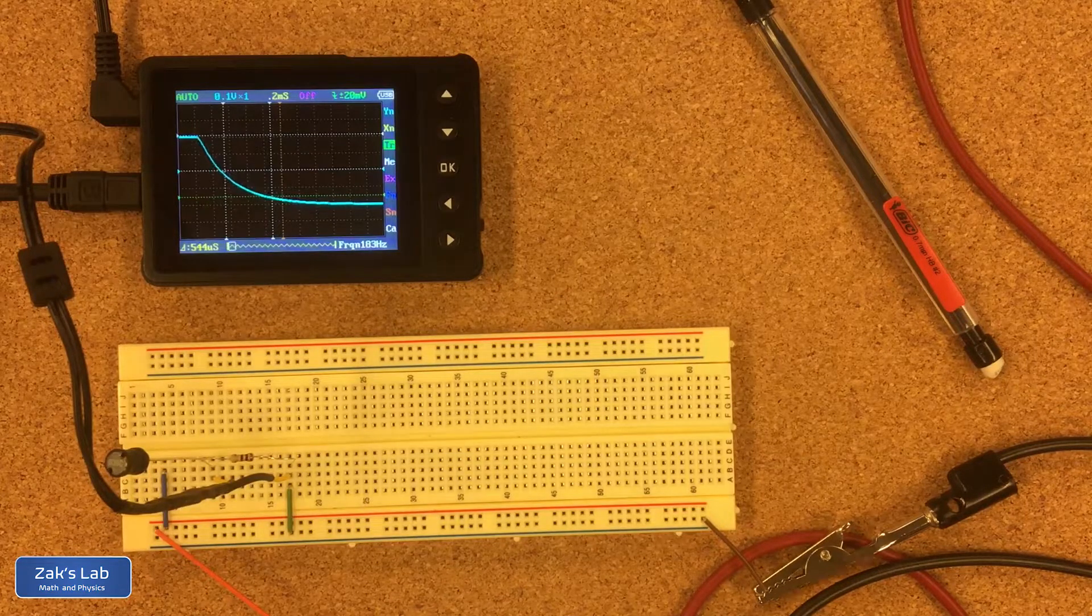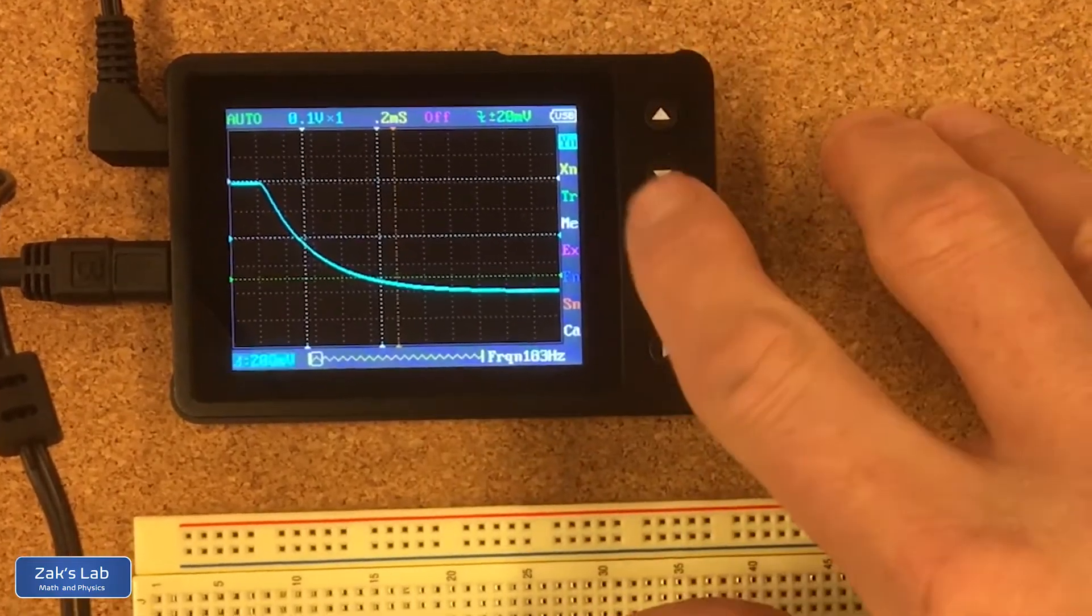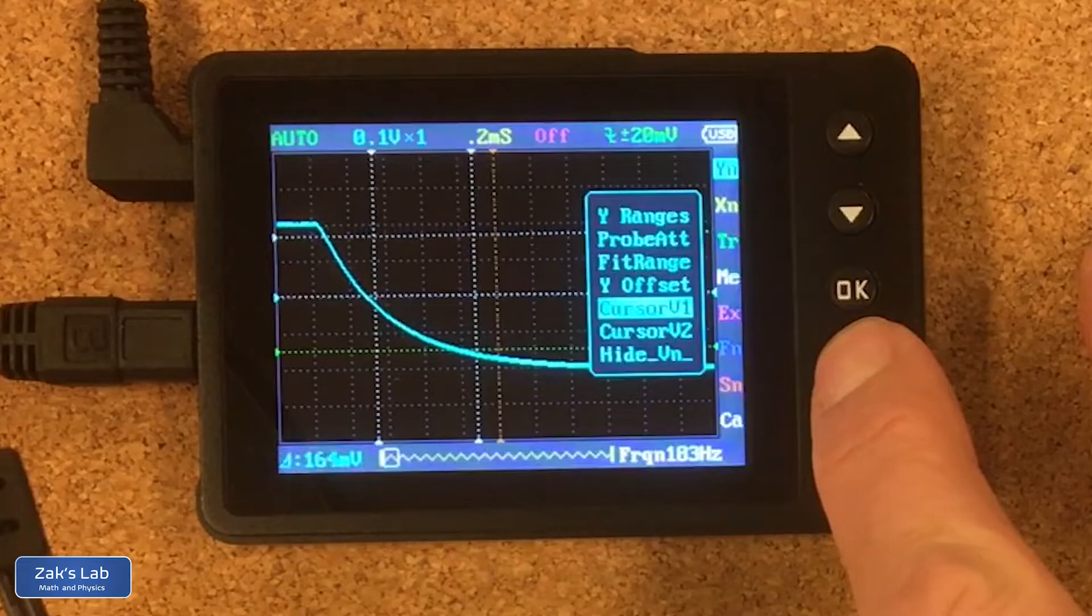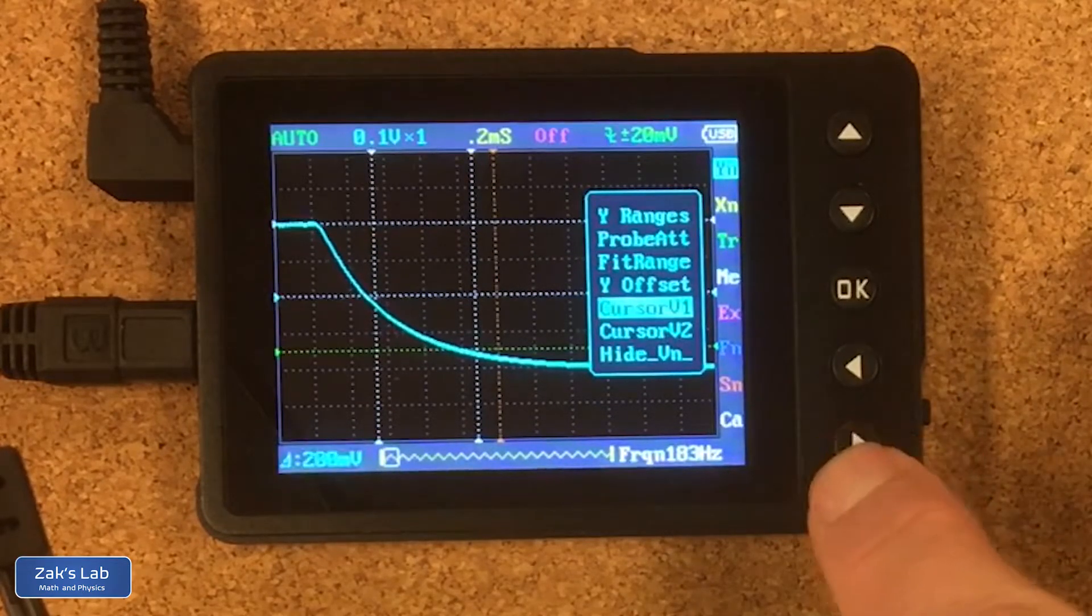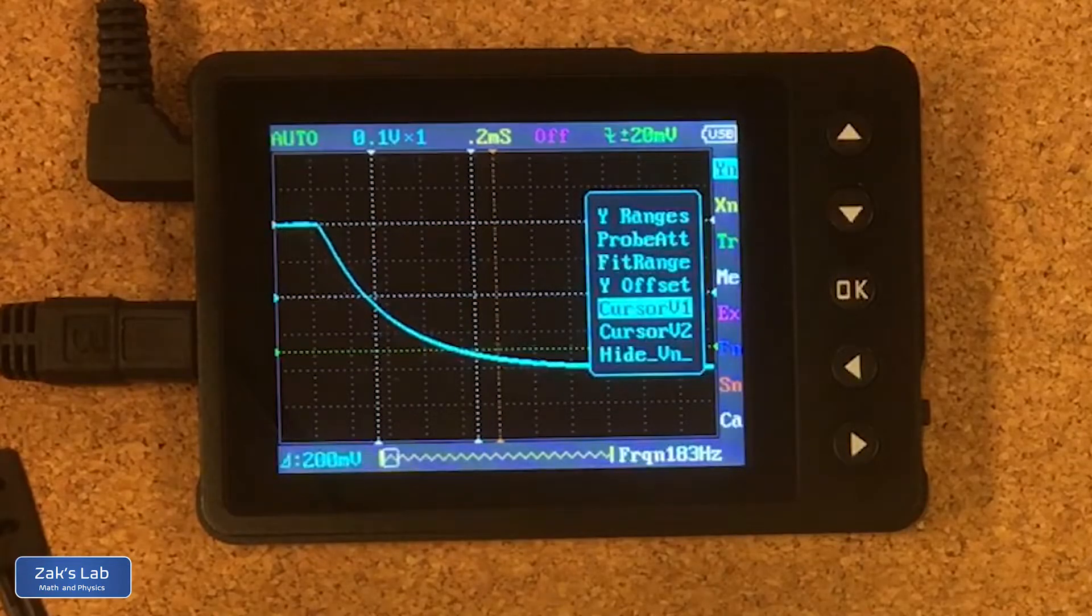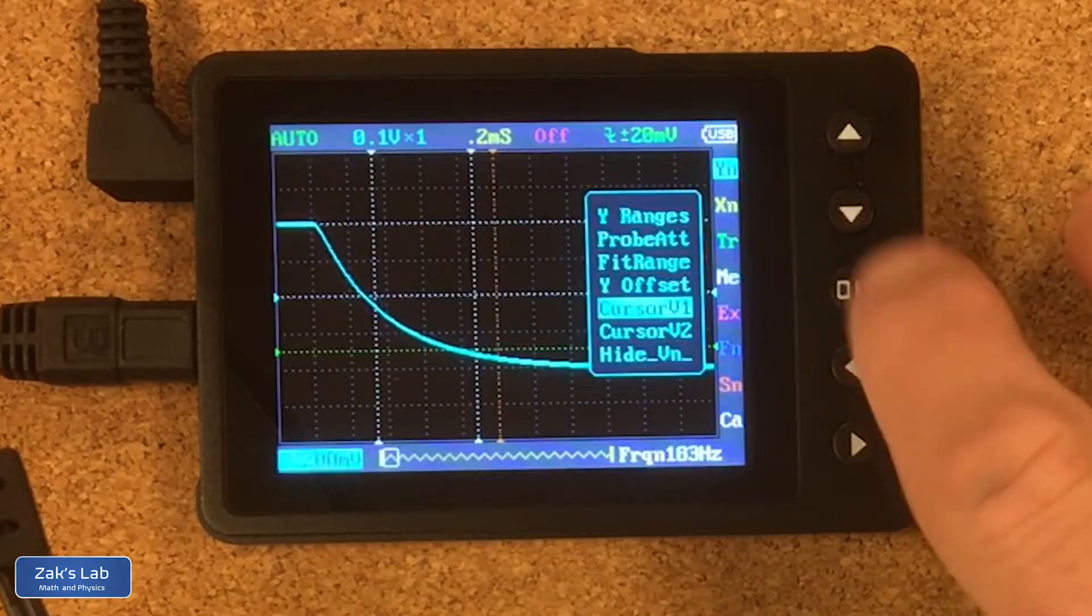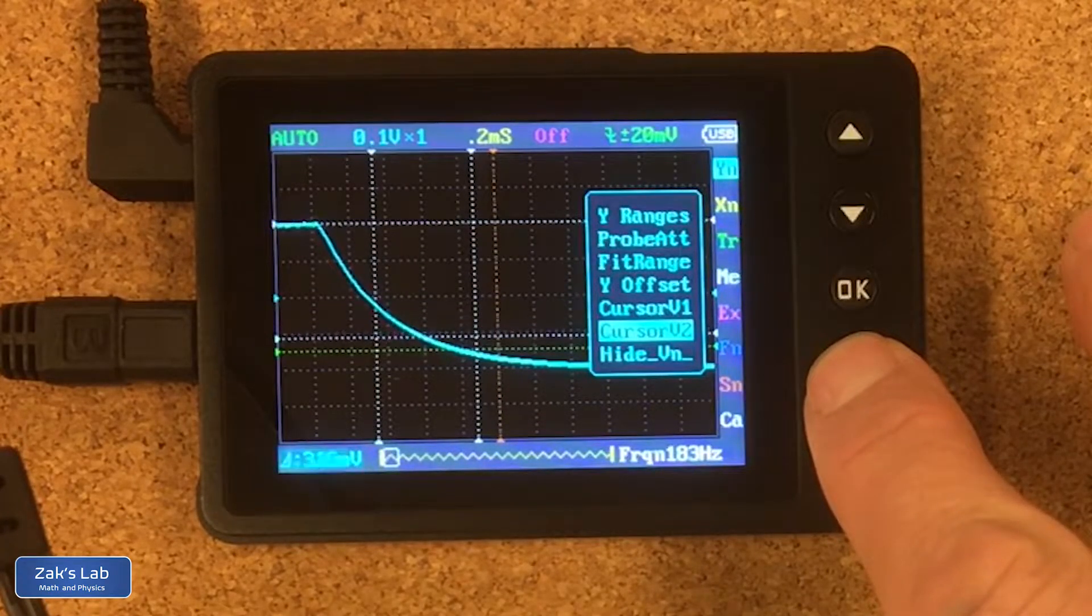Now what we're going to do next is start adjusting the cursors in the oscilloscope so we can figure out the half-life for this current to decay. So we start with our Y value cursors. I'm going to go to cursor one and you can see that white line moving up and down. I want to put it right at the maximum value. That's the maximum voltage of this signal, therefore the maximum current across the probe resistor.